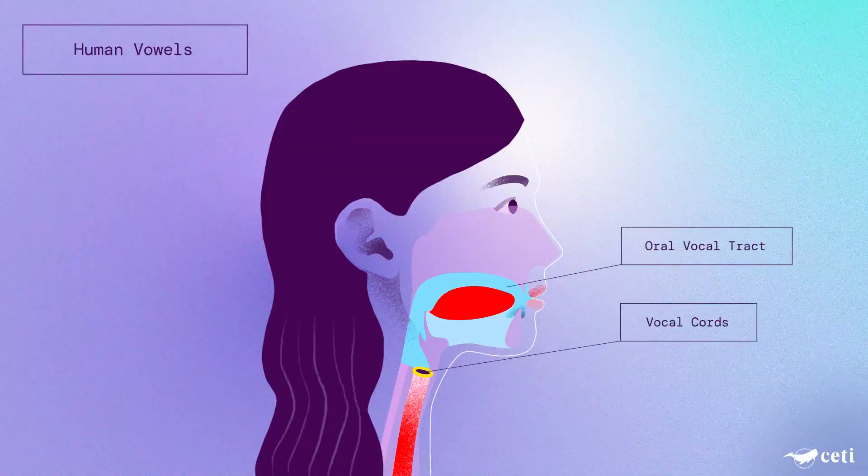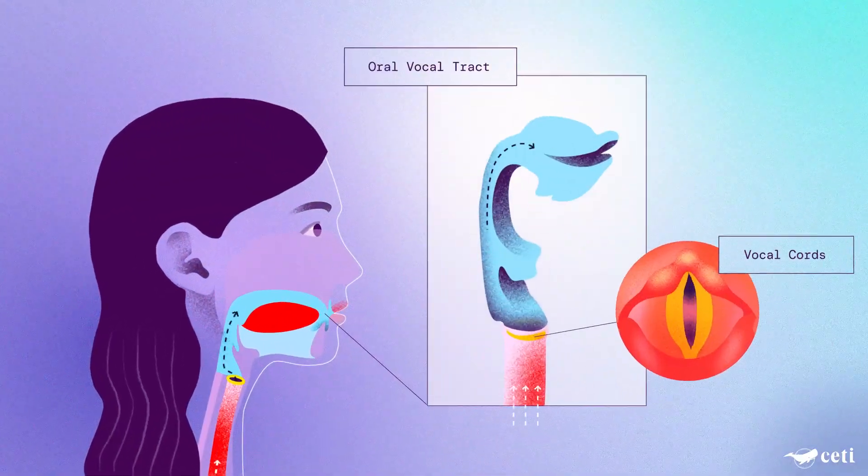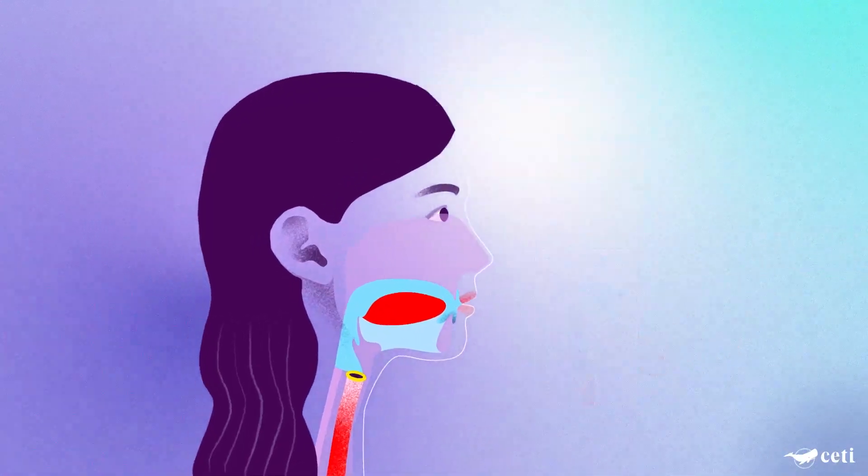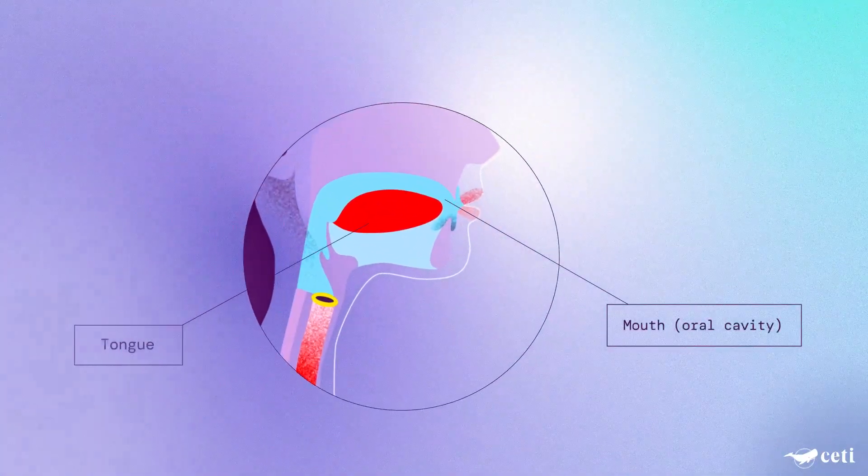So how do we produce vowels? We say all vowels by vibrating our vocal cords. By adjusting the shape of our mouth, we can say different vowels such as A and I.